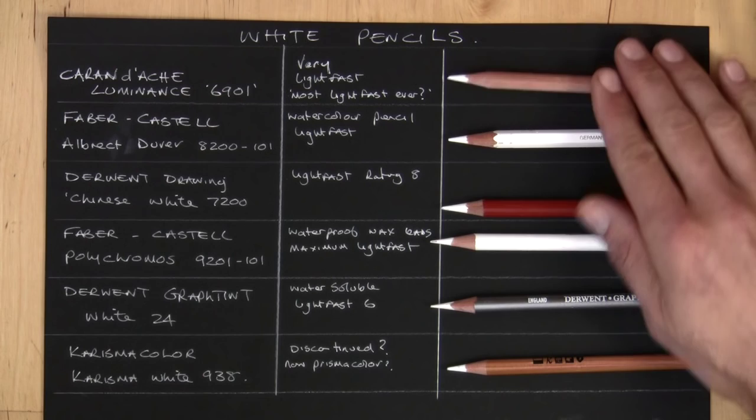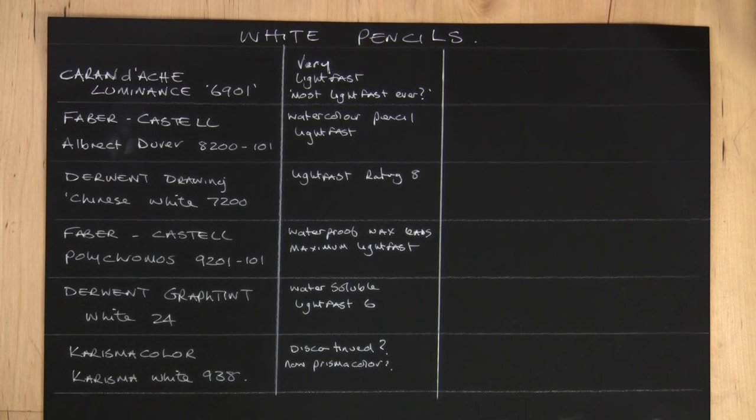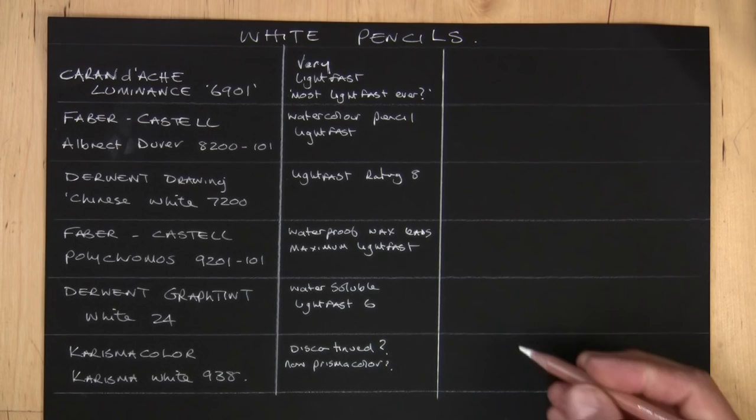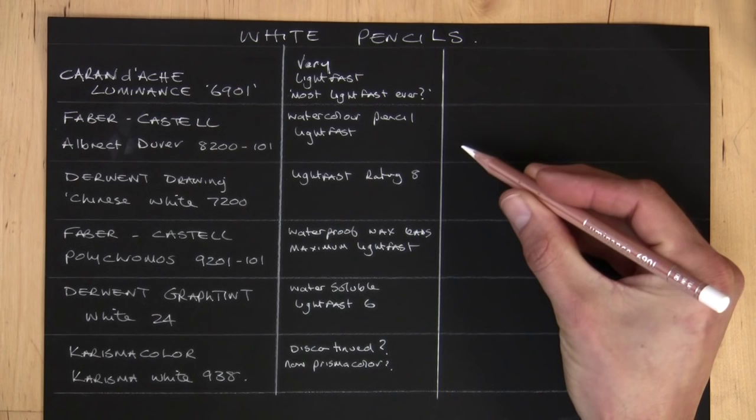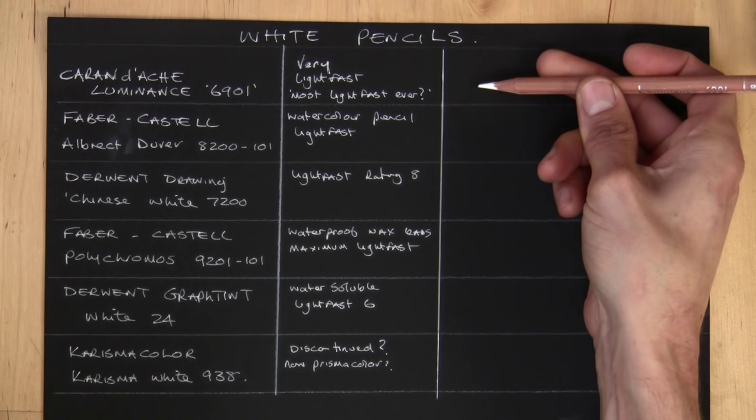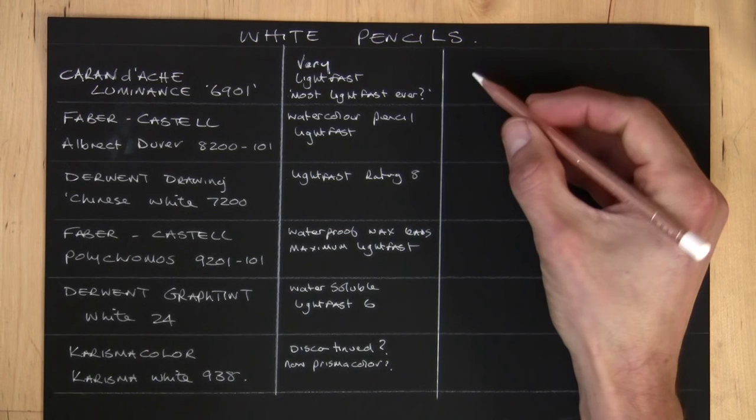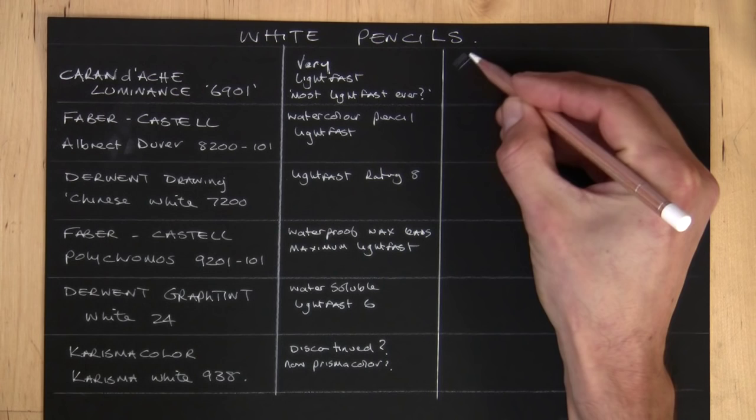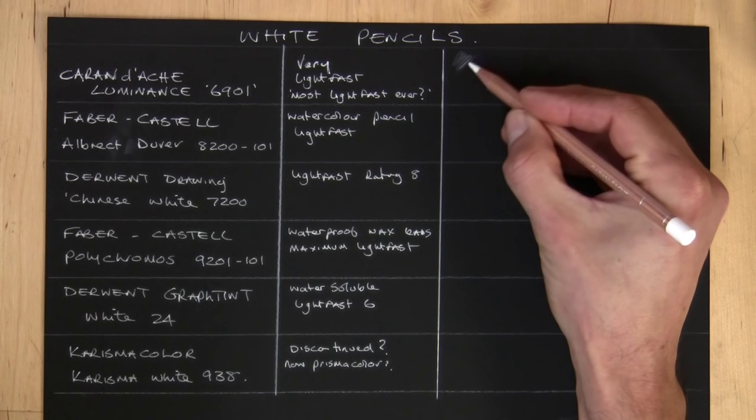As far as the light fastness, they're all regarded as light fast. Different companies use different ratings. So as long as it says light fast, a good light fast, I'm not really too bothered. I'll start off with this Luminance 6901 and I've sharpened them all to a real fine point. The reason I've done that is to also judge just how hard the lead is or how it resists breaking, because some of these break very easily.